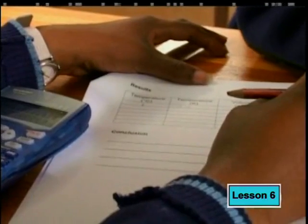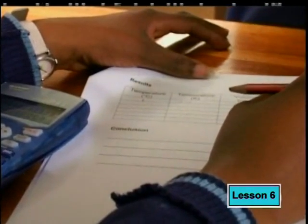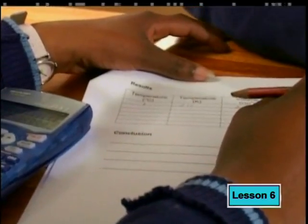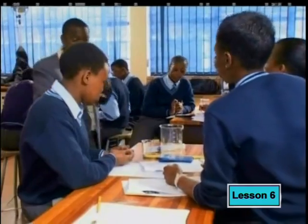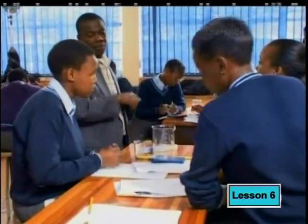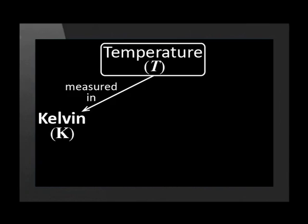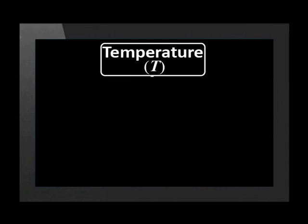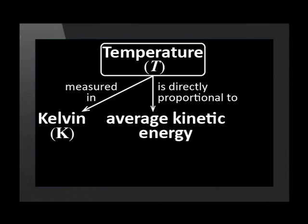The learners have been instructed to record the temperature readings as well as the corresponding volume readings. Do we use degrees or Kelvin? The temperature should be in Kelvin. In science, we measure temperature in Kelvin, not degrees Celsius. This is because a gas's temperature in Kelvin is directly proportional to the kinetic energy of its molecules, which is not the case for degrees Celsius.